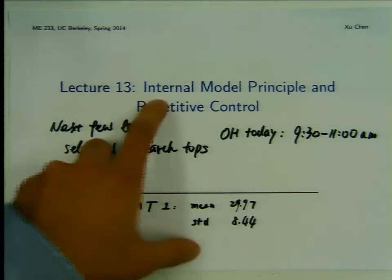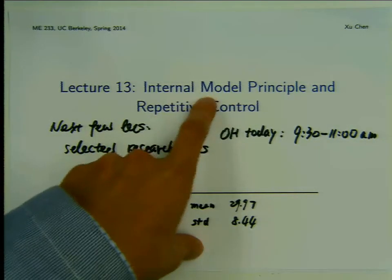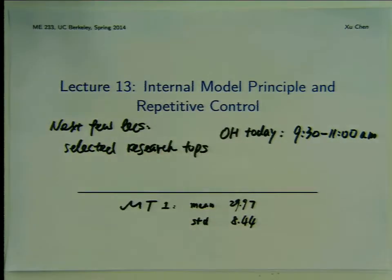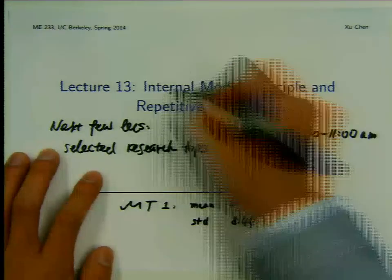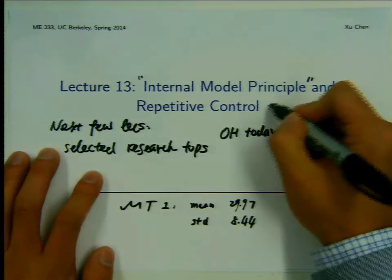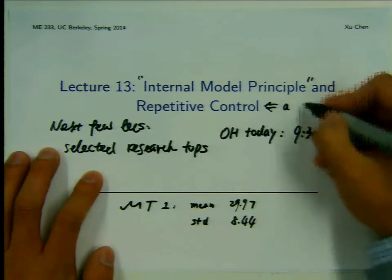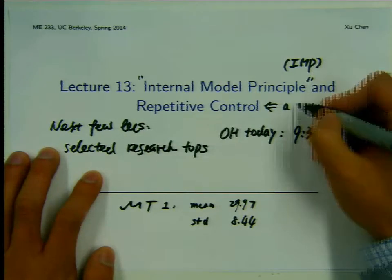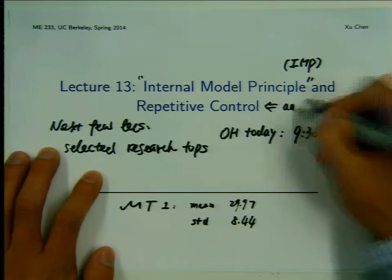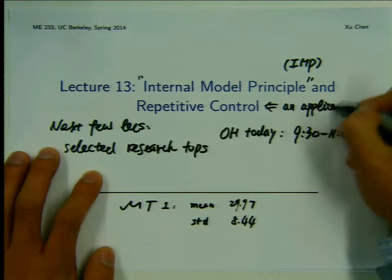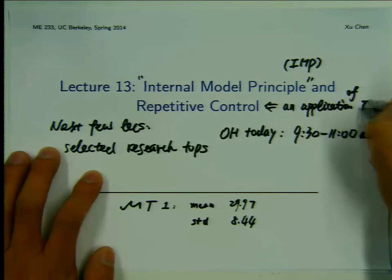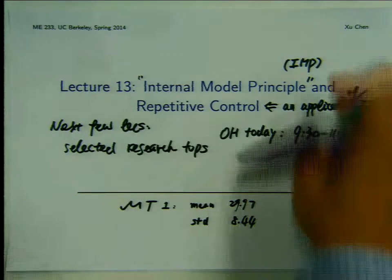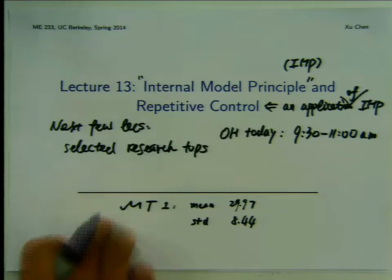Today's topic is about the internal model principle. This is an extremely useful tool in feedback and feed-forward design. One particular application is repetitive control. We usually call the internal model principle IMP for short, and repetitive control is an application of IMP. Depending on time, I think I'll cover IMP, and if I have time, I will cover repetitive control as well.